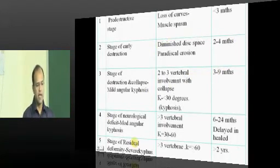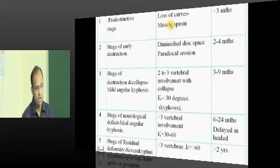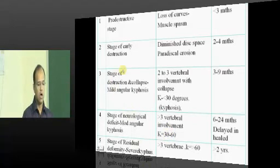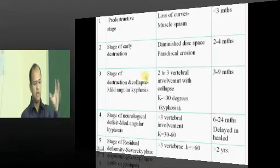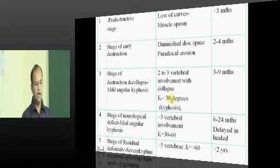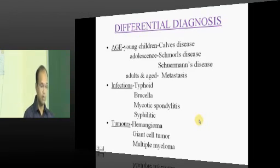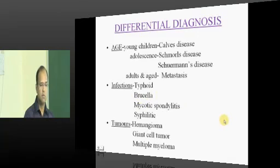The pathology of tuberculosis spine has been described in various stages: a pre-destructive stage with only muscle spasm which is often missed; an early destructive phase with diminished disk space; and a stage of destruction depending on the number of vertebrae involved — less than 30 degrees of kyphosis, between 30 to 60 degrees. These are stages of vertebral body destruction. Various differential diagnoses exist — Kümmell's disease, Schmorl's disease, Scheuermann's — but never forget tuberculosis as a differential. Typhoid and brucella can similarly mimic tuberculosis of the spine.